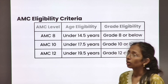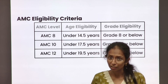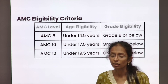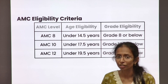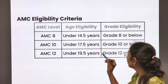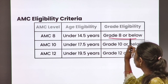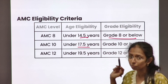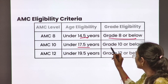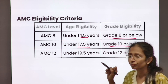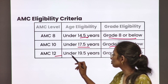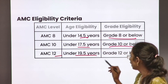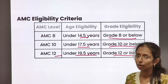Now coming over to the eligibility criteria for AMC. For AMC 8, a student must be under 14.5 years and in grade 8 or below. For AMC 10, a student must be under 17.5 years and in grade 10 or below. And for AMC 12, a student must be under 19.5 years and in grade 12 or below.